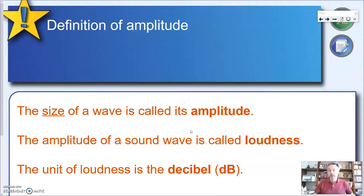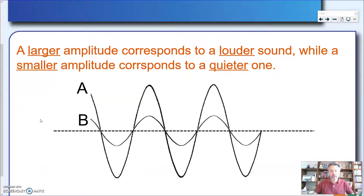And like every physical quantity, we have a unit. And this unit, in this case, is called the decibel. And it's represented with dB. You see d is lowercase and B is uppercase. So as I just told you, a larger amplitude corresponds to a louder sound. So a bigger amount of decibels, while a smaller amplitude corresponds to a quieter one.